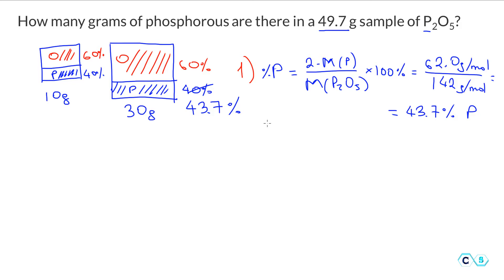Now in order to find how many grams of phosphorus we have in this sample, we can take the mass of the sample. Let's write it this way. Mass of the phosphorus is equal to the mass of the oxide multiplied by this number, 0.437. This is just the easiest way to convert the percentages. If we do this multiplication we are going to get 21.7 grams of phosphorus in this sample.